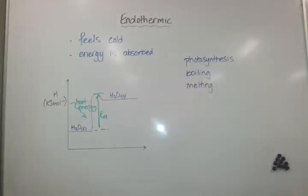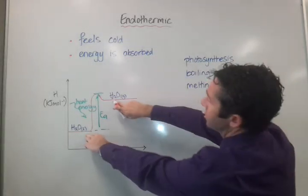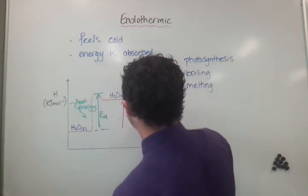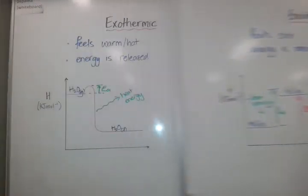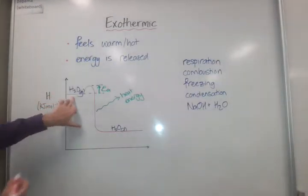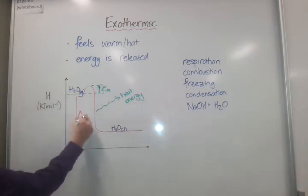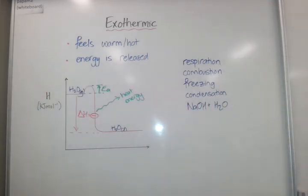The other thing you need to know is delta H, or enthalpy change — that's measured from the starting enthalpy line to the final enthalpy line. In an endothermic reaction, delta H is going to be a positive value. Conversely, in an exothermic reaction, you can see the enthalpy is going down, so delta H is going to be a negative value. These are two key concepts you need to know to go forward in this topic.